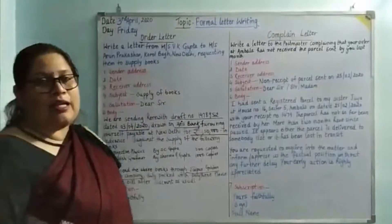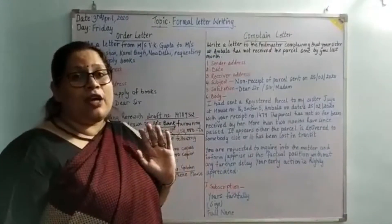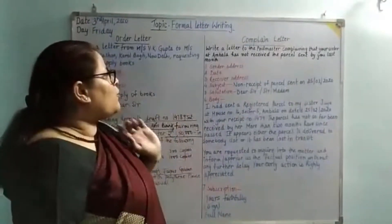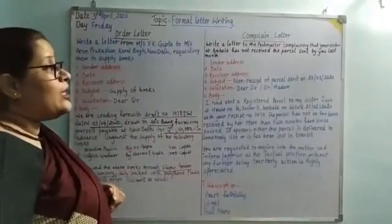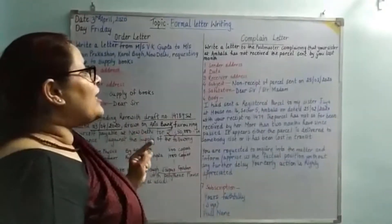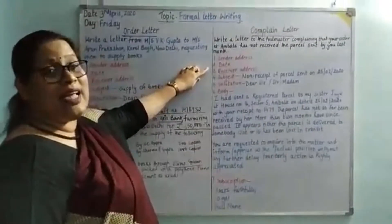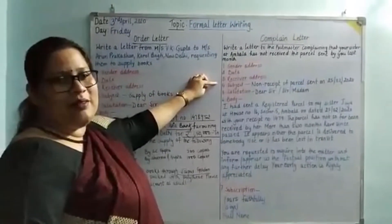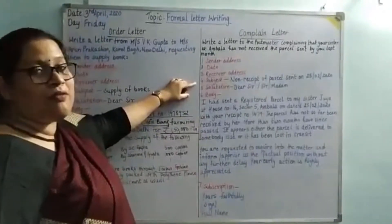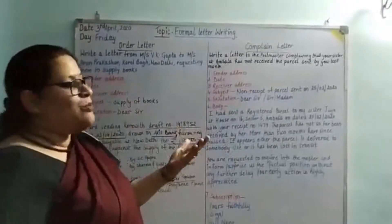Next we will be moving to complaint letters, wherein you will be complaining about a product you have already received, certain services provided, or any other reason for complaint. The question says: write a letter to the postmaster complaining that your sister at Ambala had not received the parcel sent by you last month. I have not written the sender address because you will write your own address, followed by the date. The subject will be 'non-receipt of parcel sent on 25th February 2022' — meaning you sent the parcel on 22nd February and it has not been received by your sister.